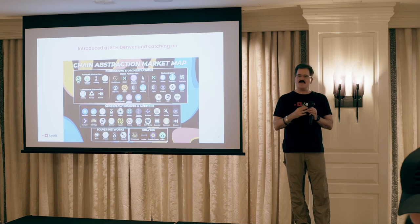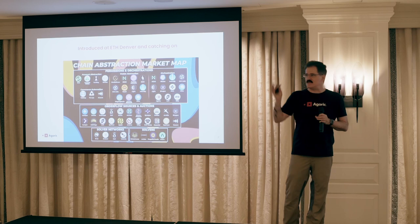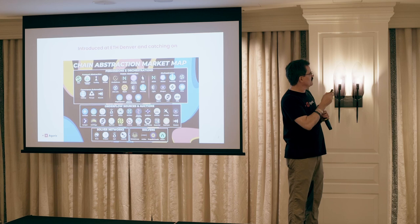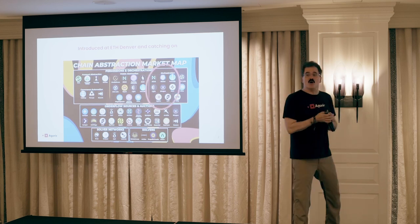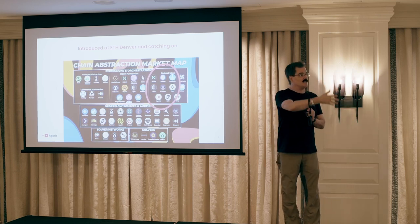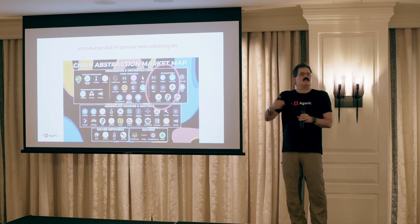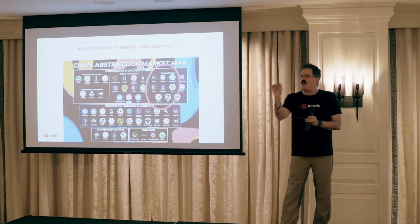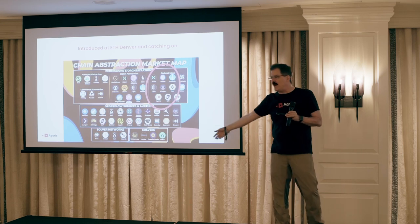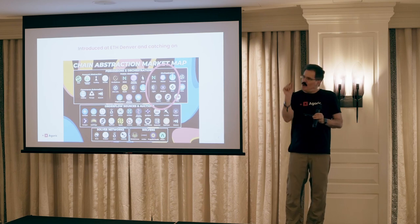There are lots of ways to approach chain abstraction. At the first chain abstraction day in February, our focus was orchestration. The people working on chain abstraction — near Flashbots etc. — were focused on intents. Intents had momentum in the Ethereum ecosystem as a way to simplify user experience, but it's a very point solution: I have token X, I want token Y, or I have token X on chain A and want token Y on chain B.